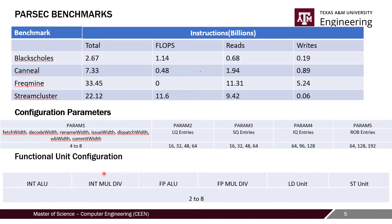Apart from that, we also varied our functional unit configuration, which includes integer ALU, integer multiply/division, floating point ALU, floating point multiply/division, and load/store units for address calculation. All of these parameters were varied for each benchmark, and we generated around 1,200 sets of results which are used to train our model.